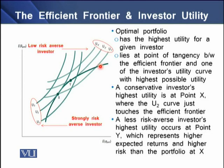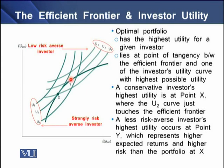For example, a conservative investor's highest utility occurs at point X, where the U2 curve is tangent to the efficient frontier — this is the optimal portfolio for investor X, offering the highest utility for a given level of riskiness. A less risk-averse investor's highest utility occurs at point Y, representing higher expected return and higher riskiness than portfolio X. Point Y is the optimal portfolio for that investor at U2 prime, offering the highest utility at a higher risk-return combination.